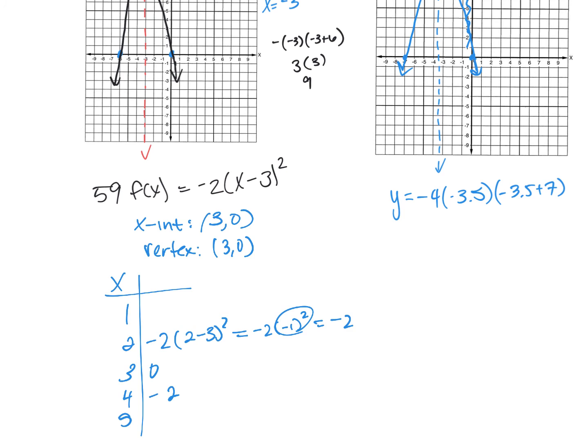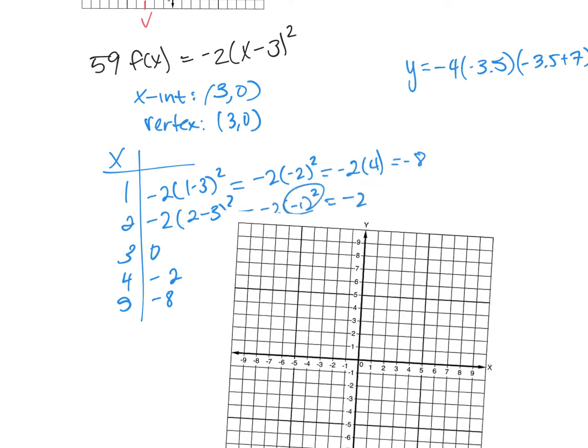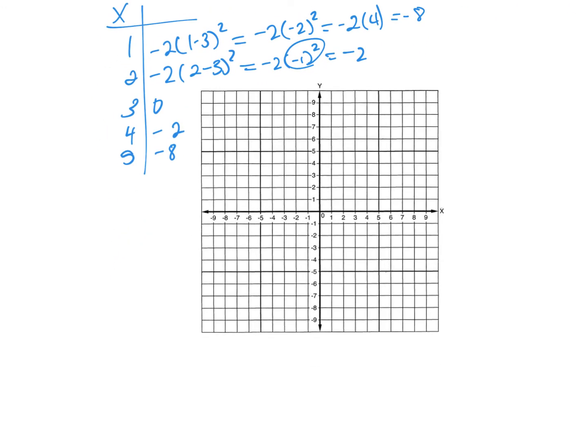I can use that. Negative 2 times 1 minus 3 squared. Negative 2 times negative 2 squared. Negative 2 times 4, which is negative 8. And so this graph is at 3, 0 and 2, negative 2, 4, negative 2, and then 1, negative 8, and 5, negative 8. And my vertex is actually on the axis, so I only have one x-intercept.